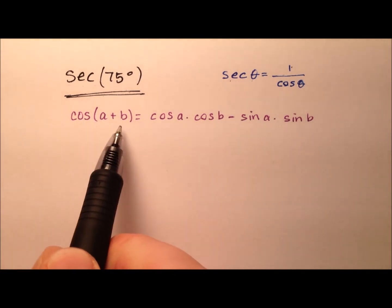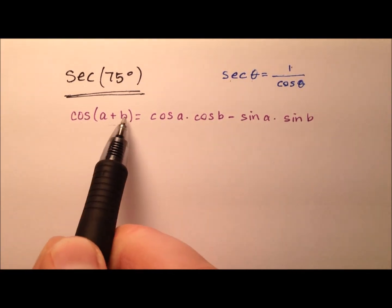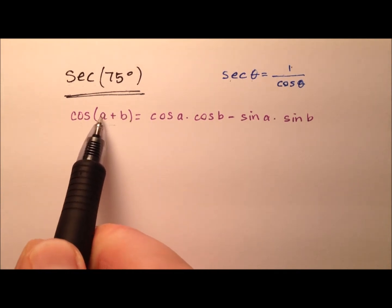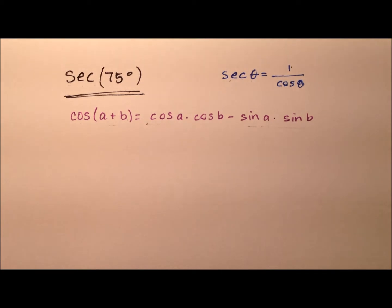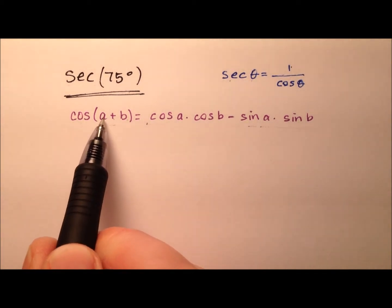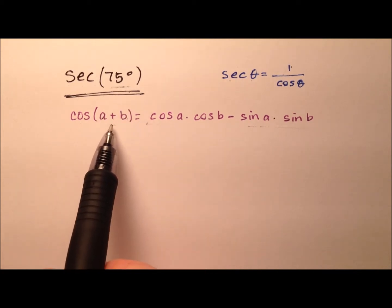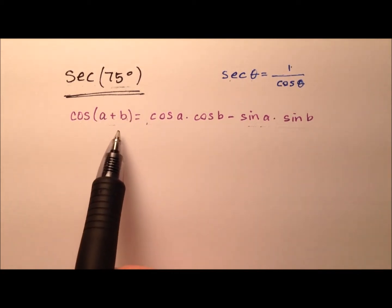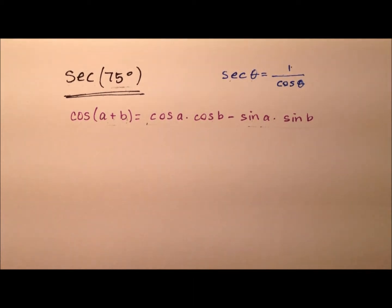So we can employ the sum identity for cosine. That says the cosine of the sum of two angles A and B has this expansion. We need two angles A and B that add up to 75 degrees, but that are also easy to work with, because we're going to take the sine and the cosine of both angles.